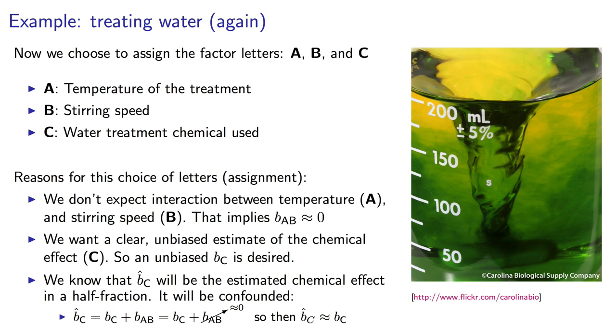Notice that I'm free to assign the letters to my factors in any way, and I can choose the assignment that causes the least problems given that I know confounding will occur. Now factor C, that chemical effect, will be confounded with the A-B interaction.